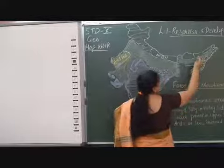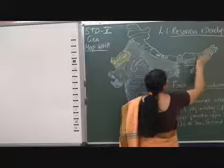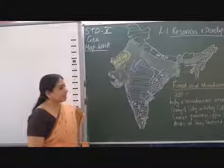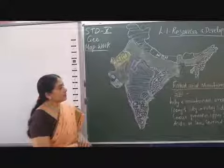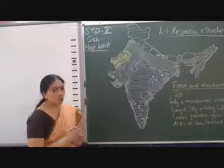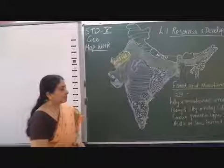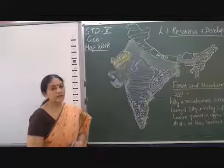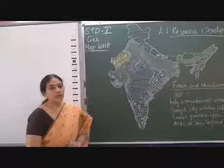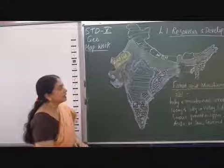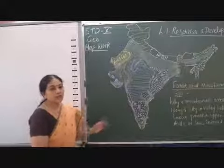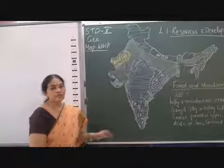In these areas, forest and mountainous soil is present. These soils are loamy and silty if found on the valley side, and coarse and well-drained if on the upper slopes. If in snow-covered areas, the soil is acidic in nature. Different types of soil are present in forest and mountainous areas, but together we call it forest and mountainous soil. In this way we have studied different types of soil and their distribution in India.